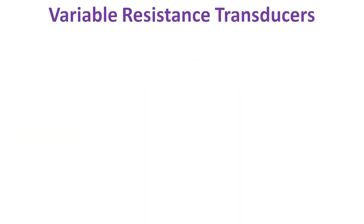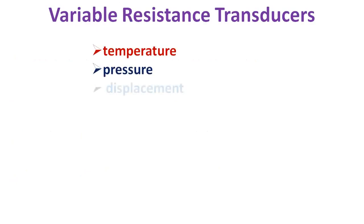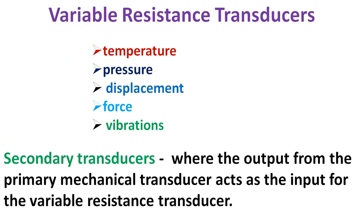The variable resistance transducers are one of the most commonly used types of transducers for measuring various physical quantities such as temperature, pressure, displacement, force, vibrations, etc. These transducers are usually used as the secondary transducers where the output from the primary mechanical transducer acts as the input for the variable resistance transducer. The output obtained is calibrated against the input quantity and directly gives the value of the input.